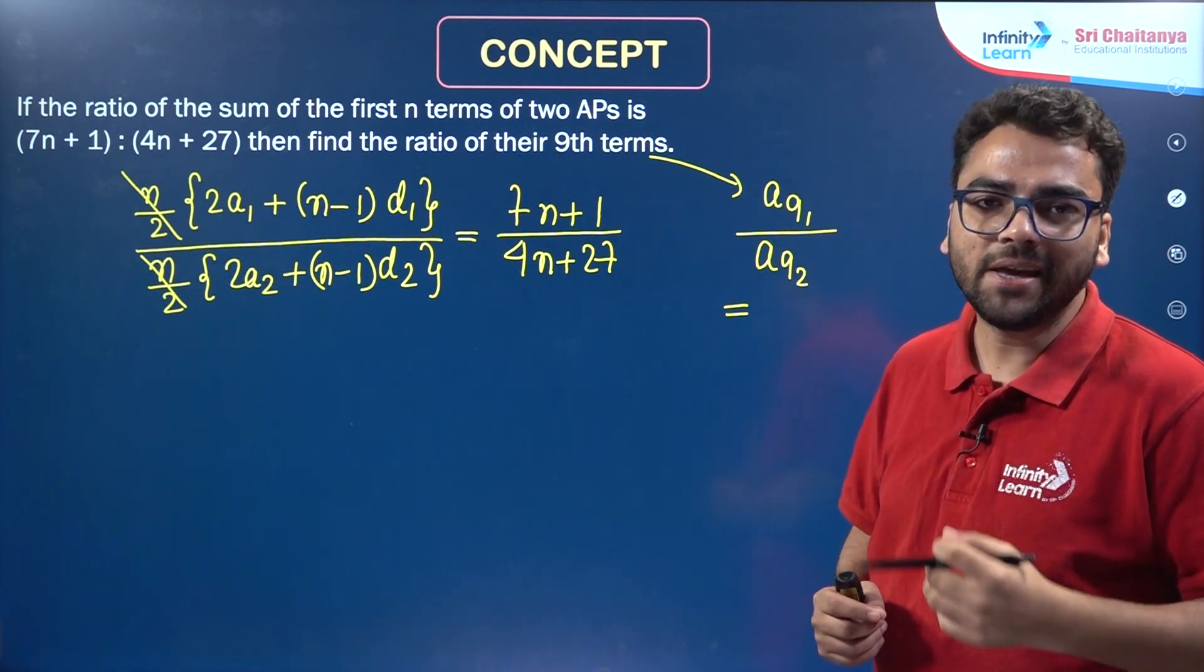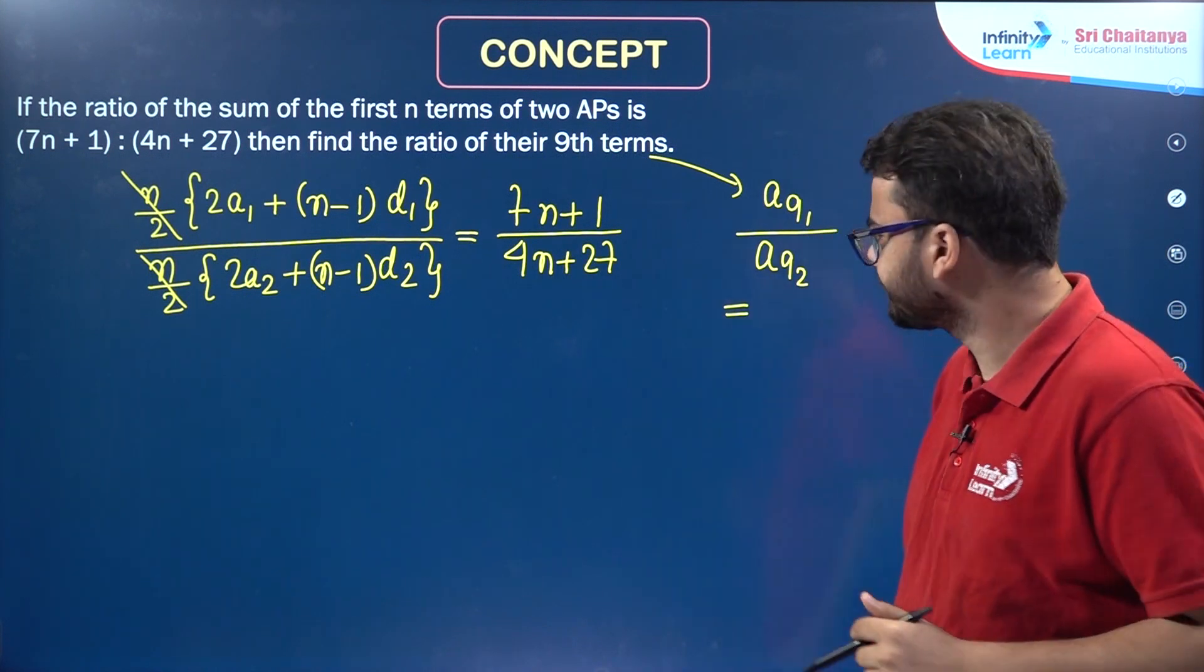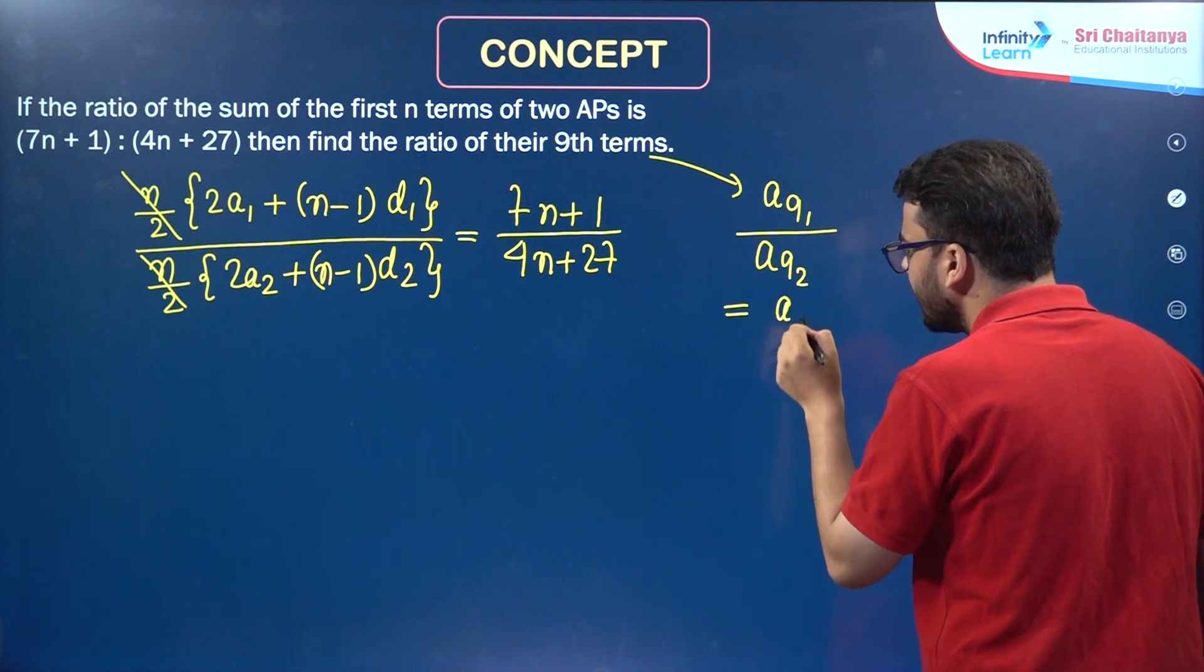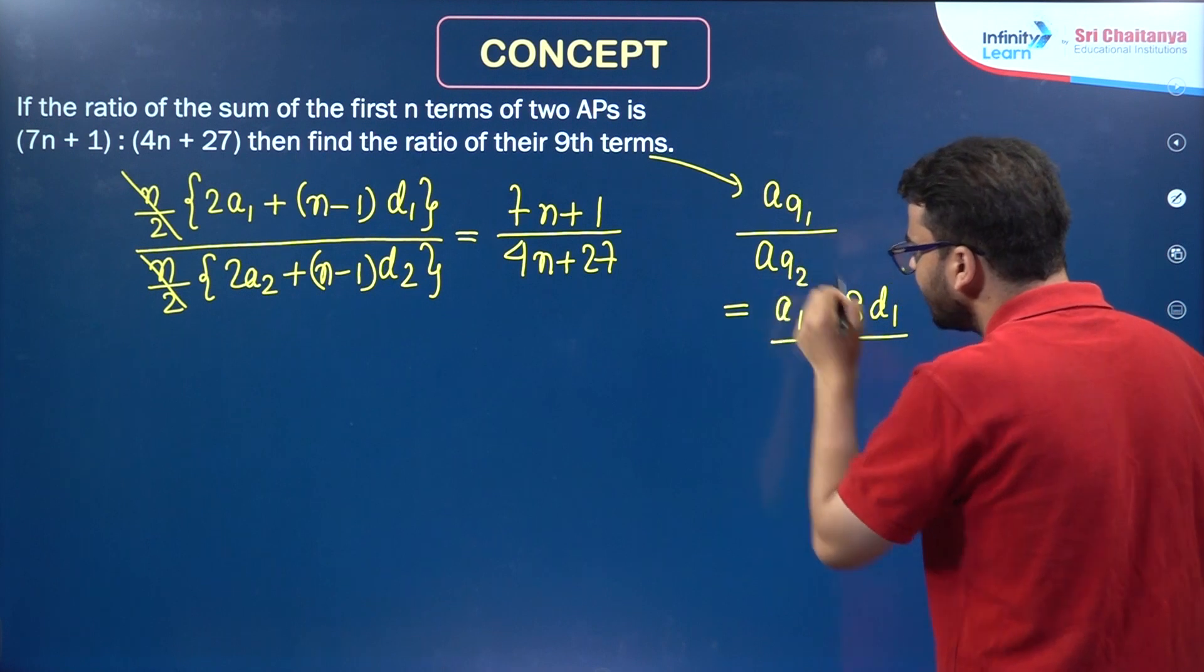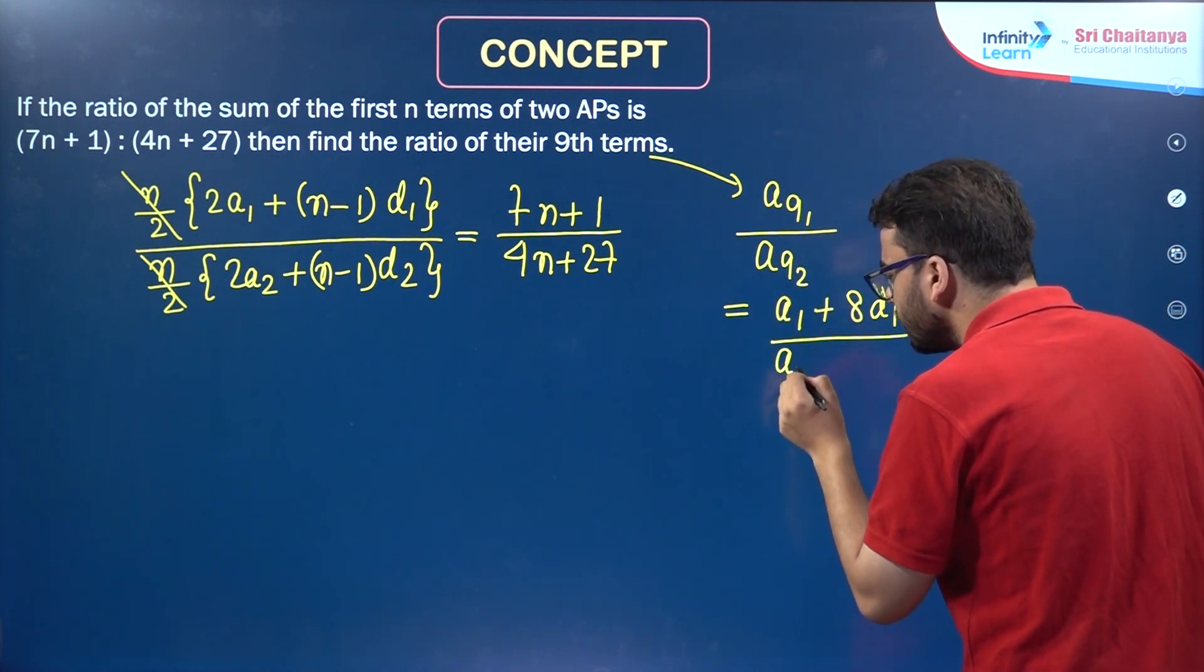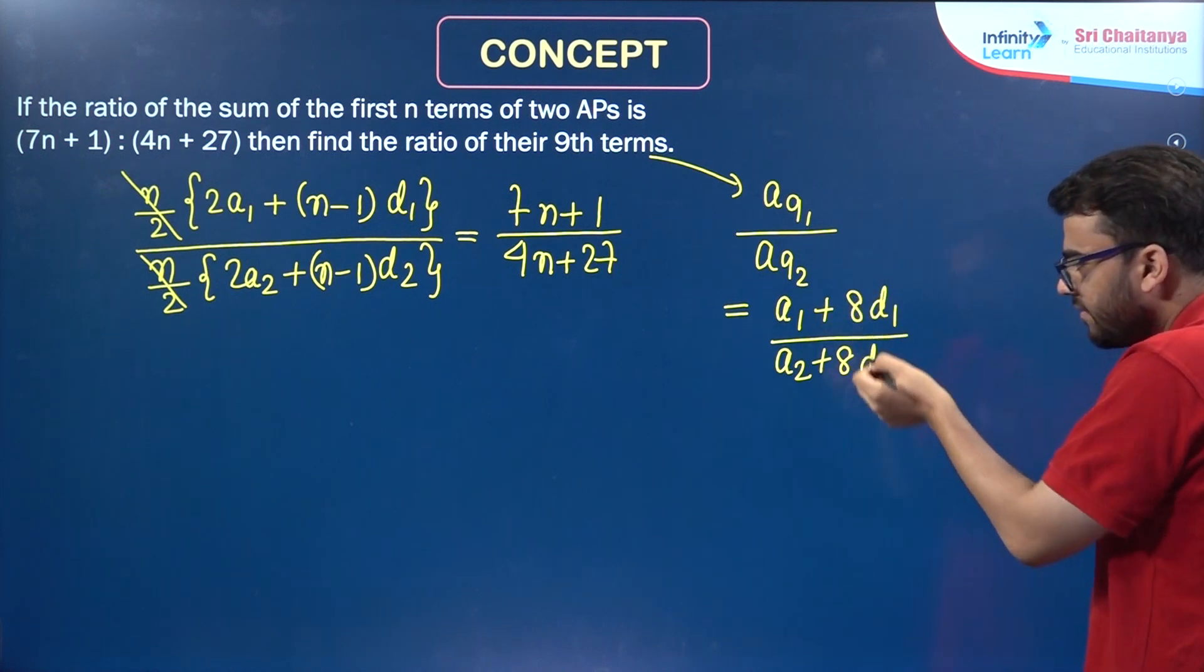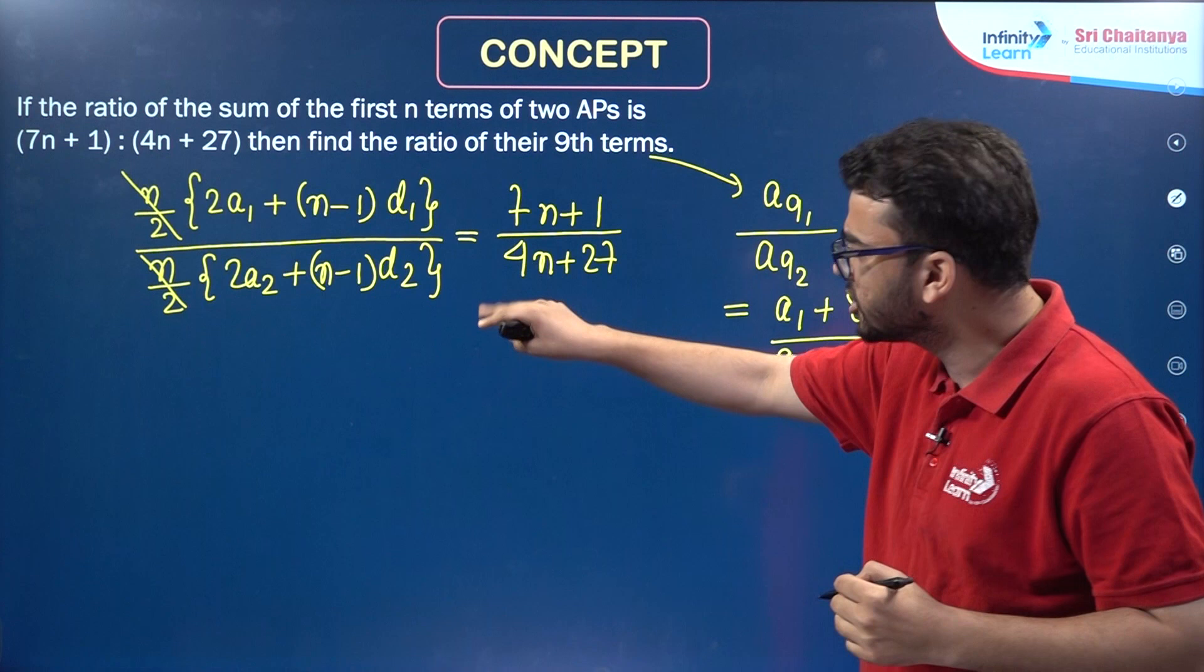So, 9th term of an AP will be A + (9-1)D, that is A + 8D. So, 9th term of the first AP will be A1 + 8D1 divided by 9th term of the second AP is A2 + 8D2. So, basically we have to find this ratio and we can find this ratio using this relation over here.